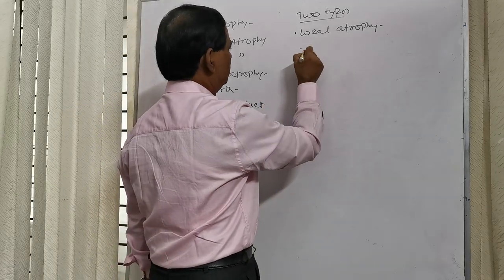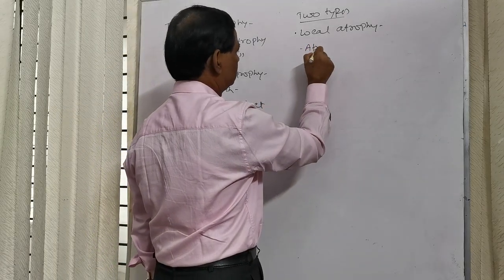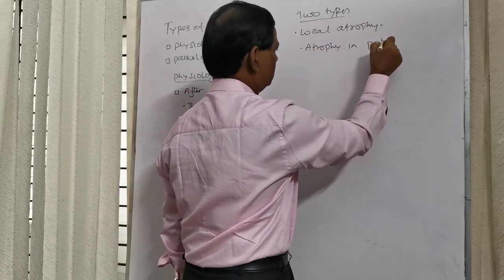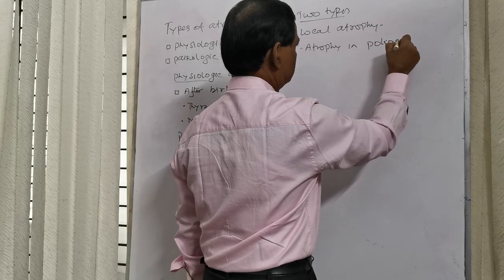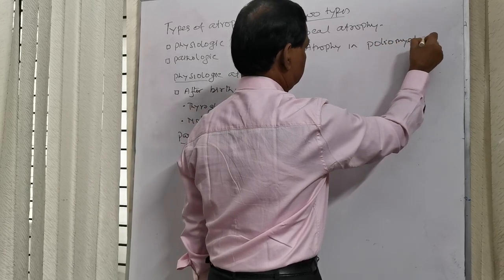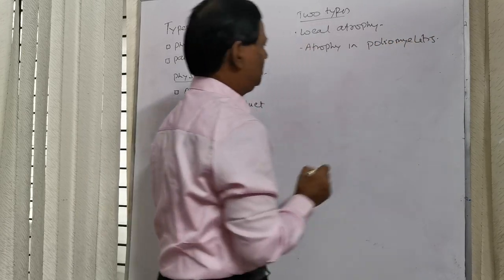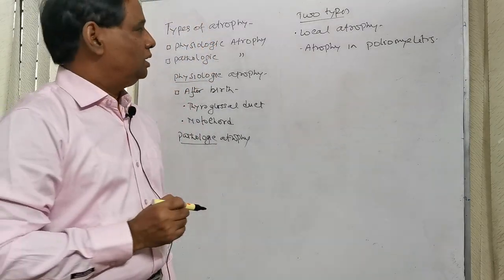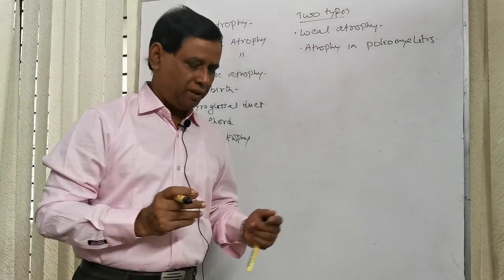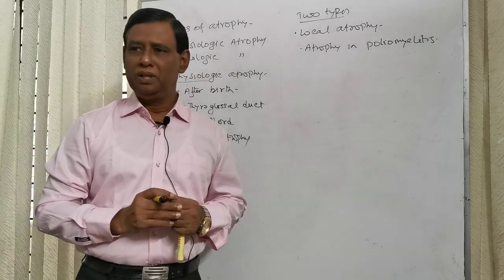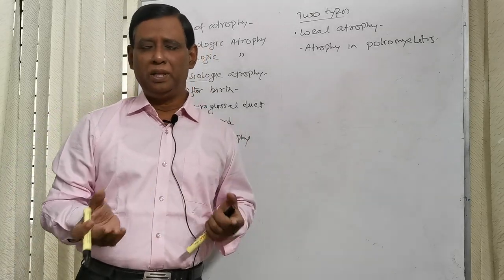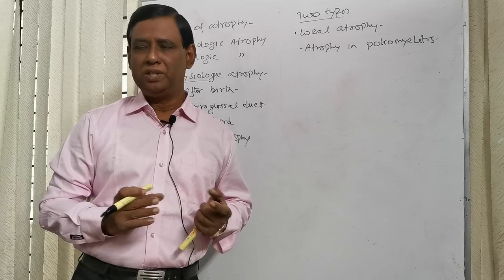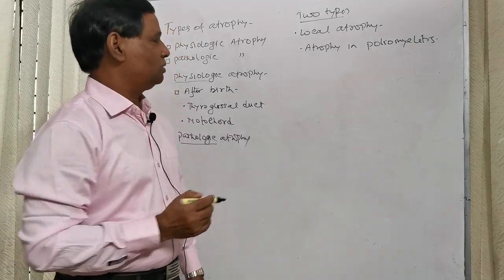Example: atrophy in poliomyelitis. In poliomyelitis, the anterior horn cells undergo destruction. So a single limb or both limbs may undergo atrophy, and this is the example of local atrophy.